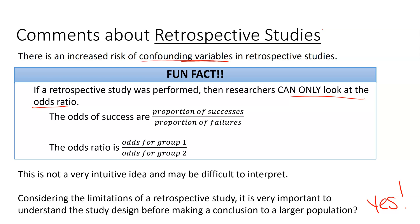With a retrospective study you can get a certain number of individuals identified based on whether they have the disease or not, then go back and take the measurements appropriate to your study. This offers additional control ensuring you get people with the disease or characteristic you're looking for. But there are drawbacks as well.